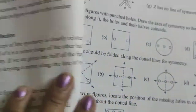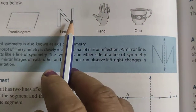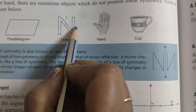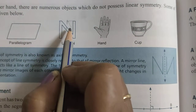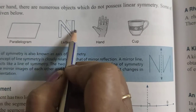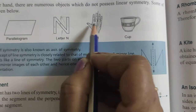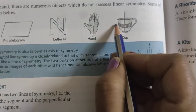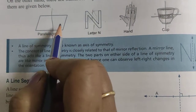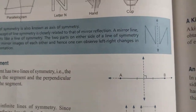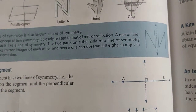However, some figures cannot be folded into equal halves. For example, this irregular shape — if you try a line of symmetry, the two parts will not fall equally on each other. A hand — both sides are not equal. Similarly with a cup, and a parallelogram — whether you try this way or that way, the parts are not equal.